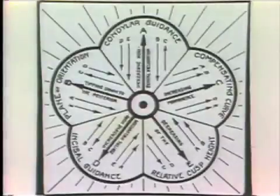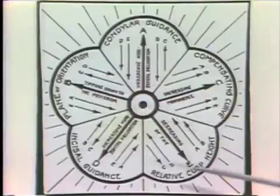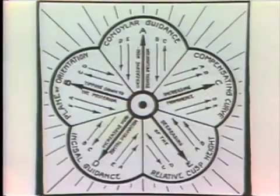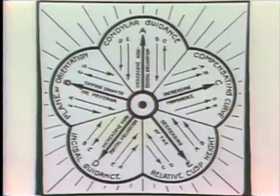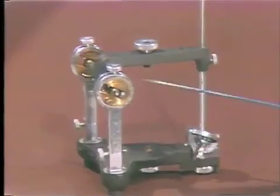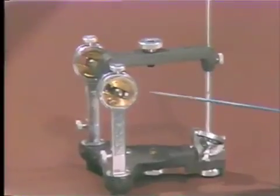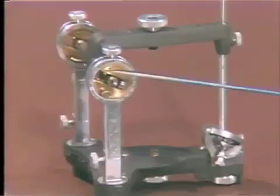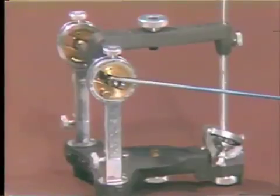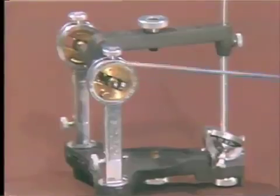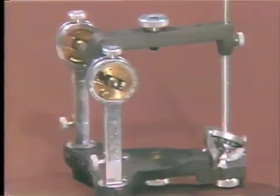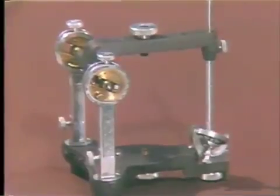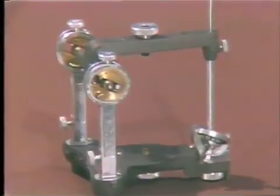The other three factors in Hanna's Quint — the plane of orientation, the relative cusp height, and the compensating curve — are factors which take place and are developed within the central confines of this articulator. Therefore, it becomes extremely important where we locate the maxillary and mandibular cast. That is one of the reasons for taking a face bow transfer — it allows us to position the cast in relationship to the condylar mechanism of the articulator. These five factors that Hanna has presented are extremely important in articulation, and one must utilize this instrument to its fullest capabilities in order to achieve bilateral balanced articulation.